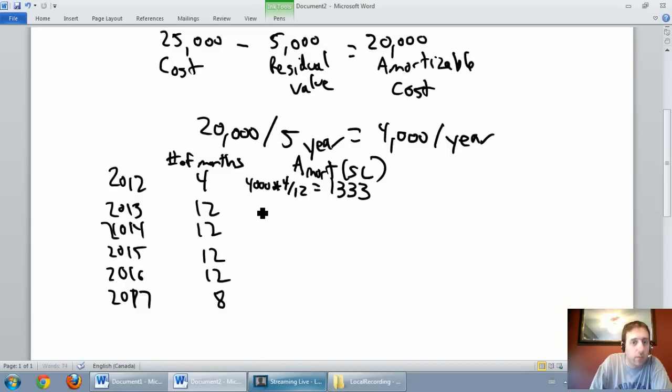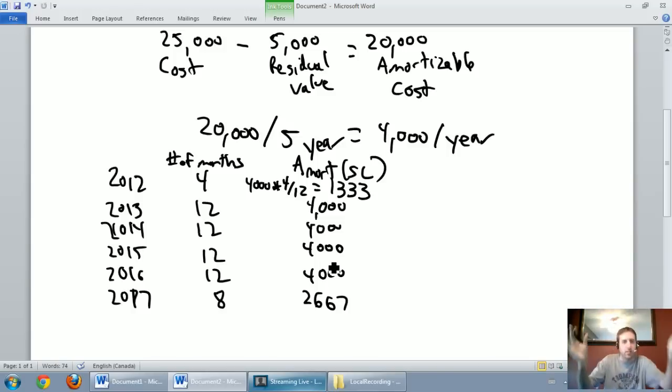Our amortization for the year 2012 is 1333. For 2013 we're going to take 4,000 times 12 twelfths because it's 12 out of 12 months, so it's just 4,000. Same thing for 2014, it'll be 4,000. 2015 it'll be 4,000. 2016 will be 4,000. And 2017 we've got to go 4,000 times 8 twelfths, and what you're going to find there is it's 2667.